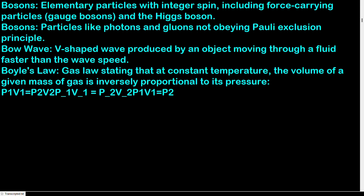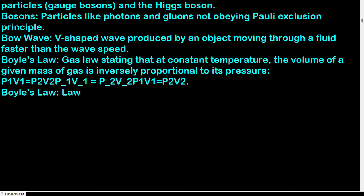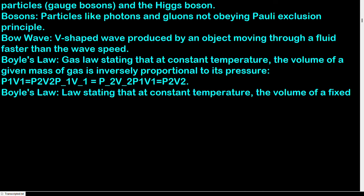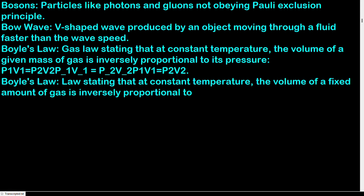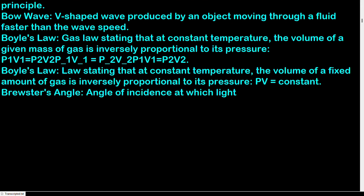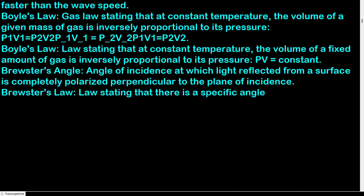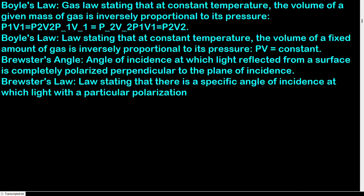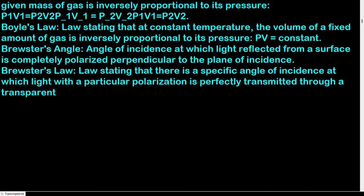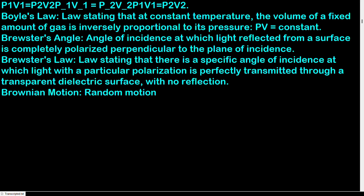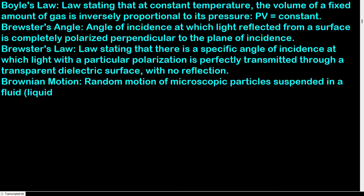Boyle's law: at constant temperature, the volume of a fixed amount of gas is inversely proportional to its pressure; PV = constant. Brewster's angle: angle of incidence at which light reflected from a surface is completely polarized perpendicular to the plane of incidence. Brewster's law: at a specific angle of incidence, light with a particular polarization is perfectly transmitted through a transparent dielectric surface with no reflection. Brownian motion: random motion of microscopic particles suspended in a fluid, caused by collisions with surrounding molecules.